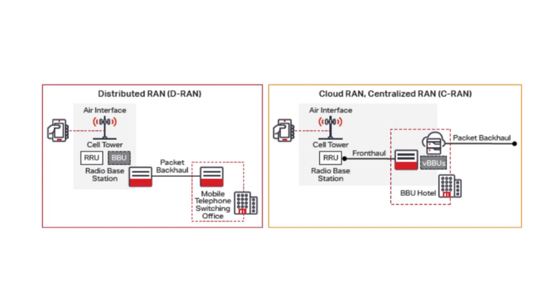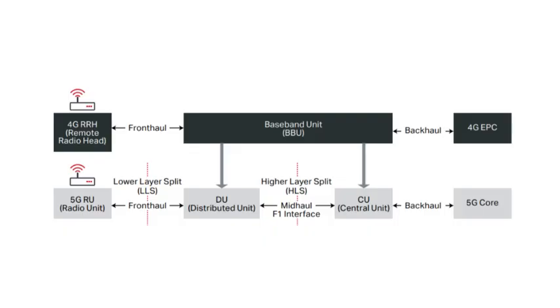The inter-channel interference is reduced because of joint scheduling and processing. The further split of BBUs into DU and CU was also introduced as a second architectural option for Cloud RAN. This decomposition of the BBU introduced a new interface called mid-haul, which sits between DU and CU.